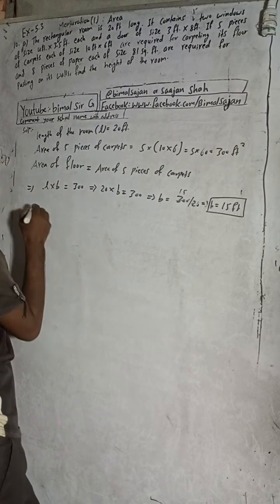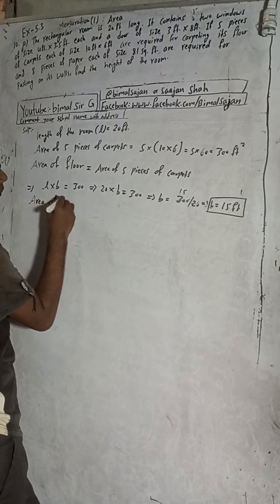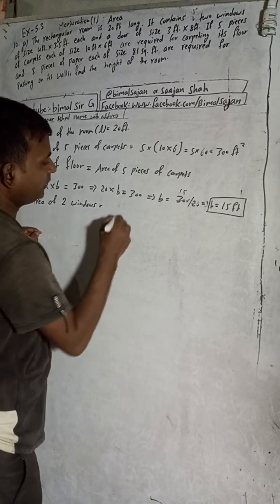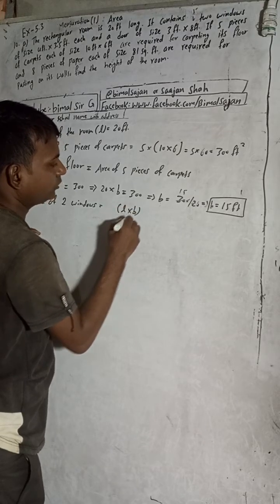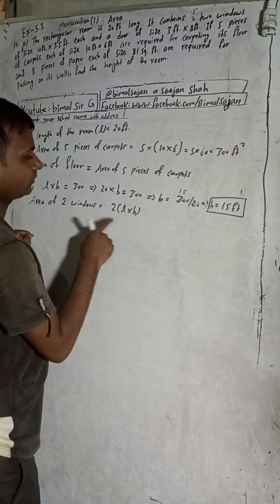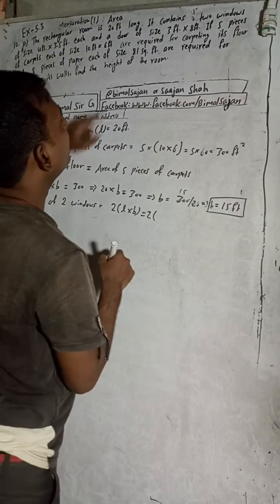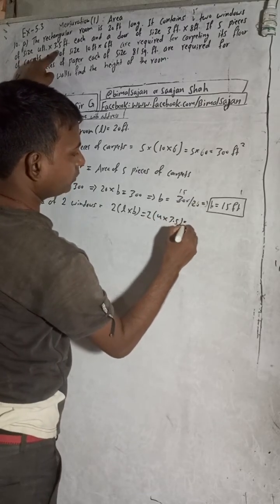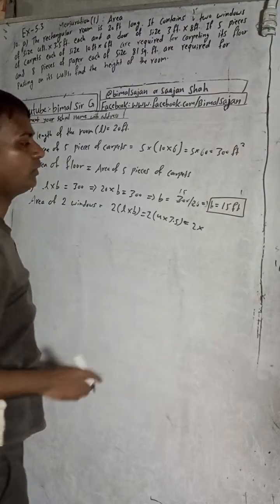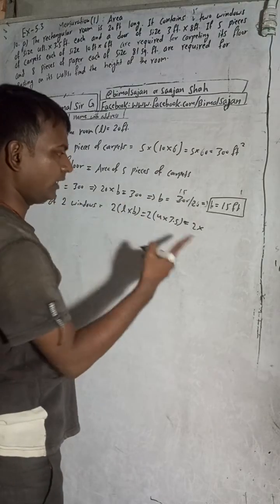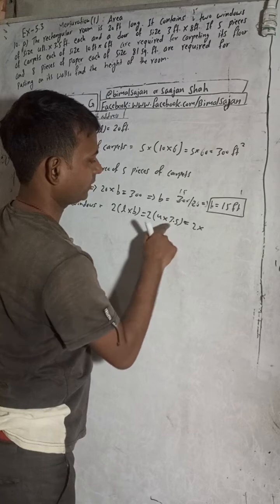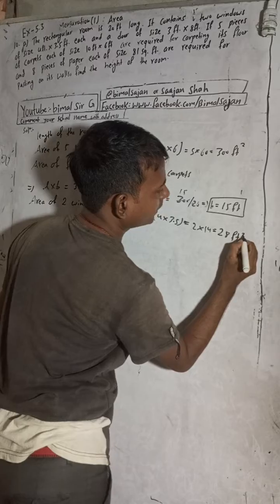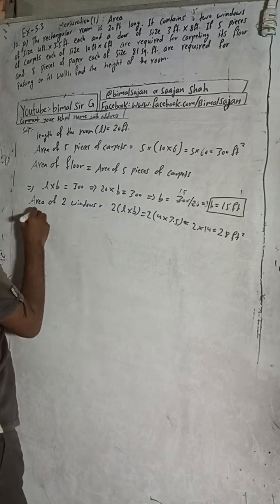To find the height of the room, we first find the area of the two windows. Area of two windows equals 2 × length × breadth of one window. The window size is 4 feet by 3.5 feet, so it is 2 × 4 × 3.5. That gives 2 × 14, which equals 28 square feet. The area of two windows is 28 square feet.